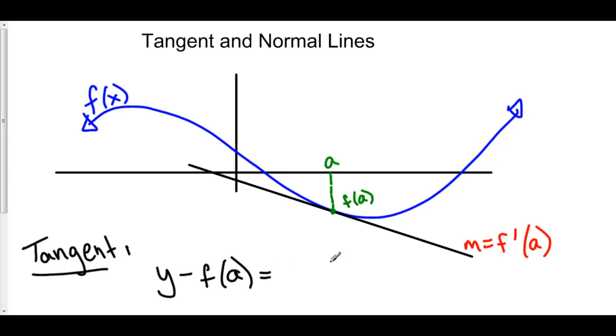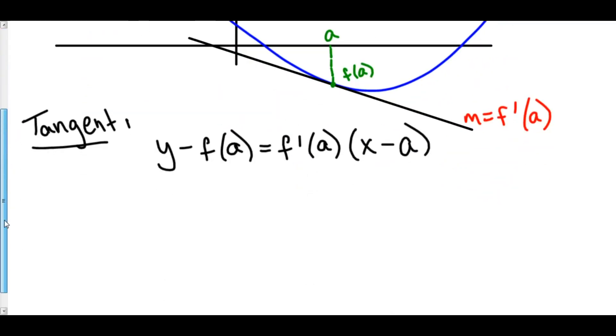is equal to our slope, here the slope is the derivative of f at x equals a, times x minus x1, my x1 here is a. So, this is the equation of a tangent line using point slope form. Of course, if you want to get this into y equals mx plus b form into slope intercept form, just add your f of a to the other side.